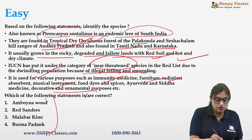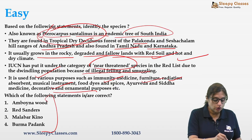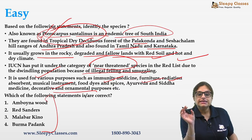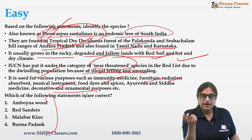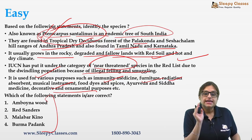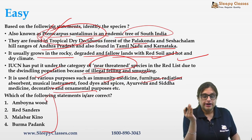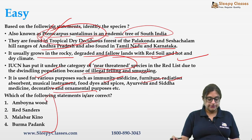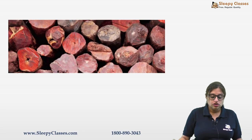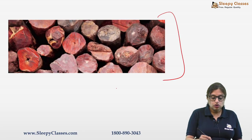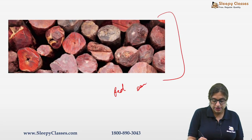This was a very easy question if you'd heard of Red Sanders. Even from its scientific name 'santalinus' you can guess it's related to sandalwood. Its IUCN status was previously endangered but has improved to near threatened. It is also known as Red Sandalwood. It was in news because the Red Sanders Anti-Smuggling Task Force, based in Tirupati, conducted a joint operation.